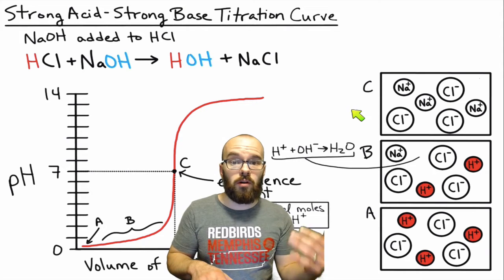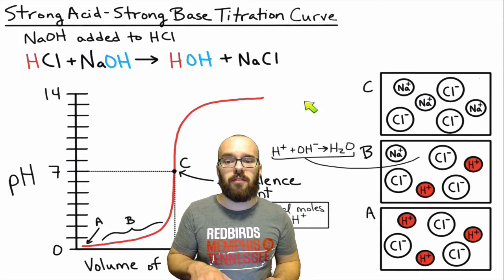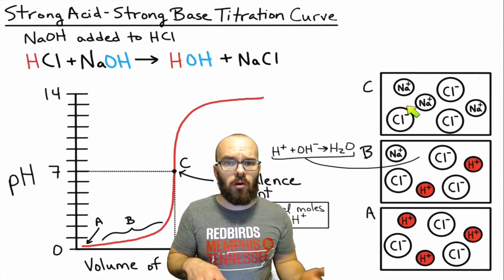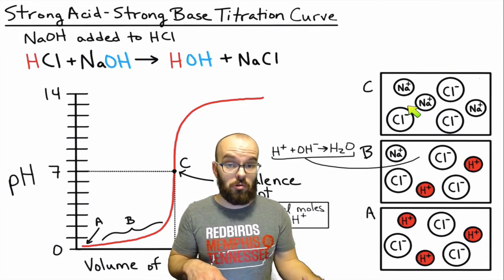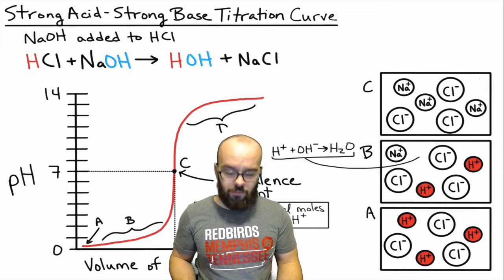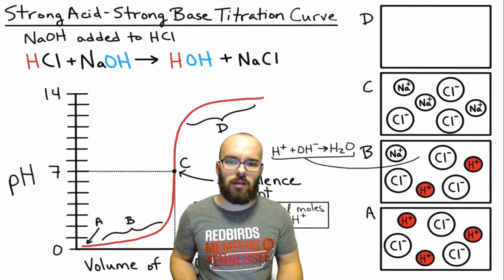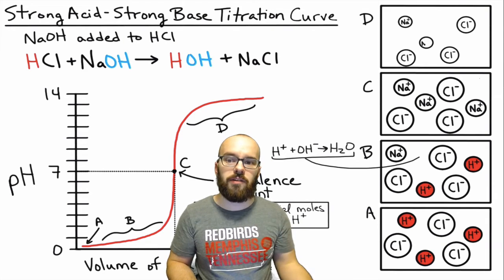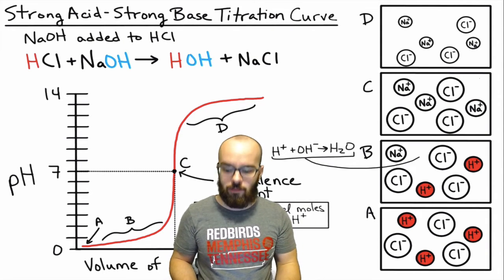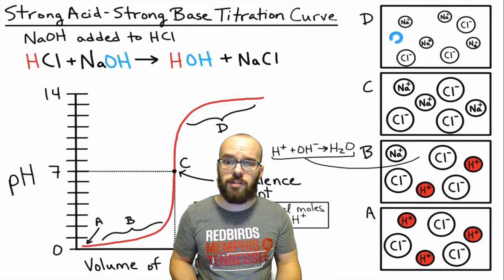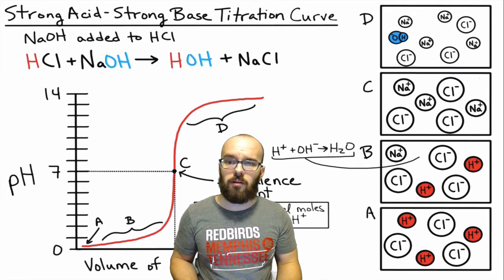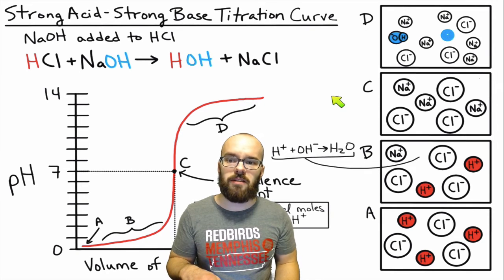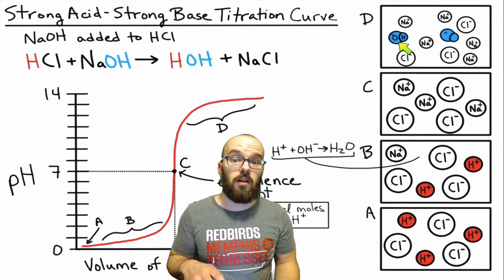Finally, as we add more hydroxide to the solution there are no more hydrogen ions to neutralize. In this fourth range (point D) we still have the chloride and sodium ions, but as we add more sodium hydroxide we just accumulate sodium and hydroxide ions in solution, ending up with a basic solution with an excess of hydroxide ions.